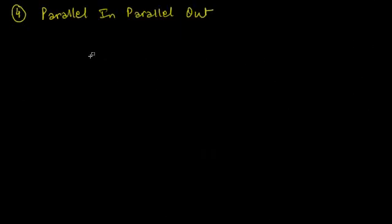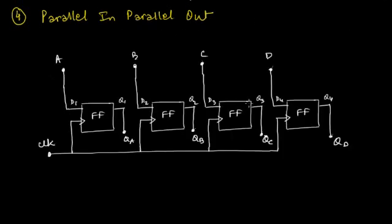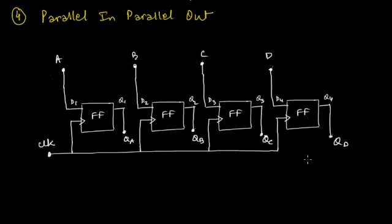Next up we have the parallel in, parallel out register. In this type of register, this is probably the simplest circuit of them all. As the name says, data will be taken as input parallelly as well as output parallelly, so both input and output are available as parallel data.